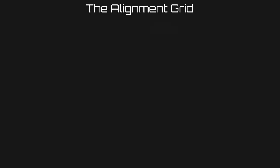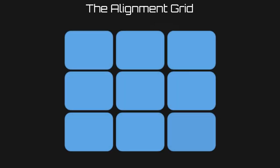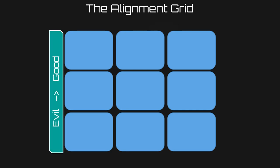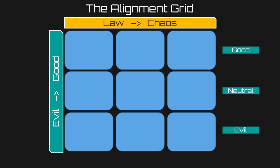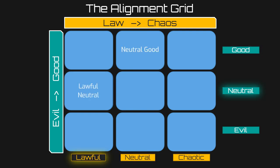The classic representation of alignment is a 3x3 grid with 9 boxes total. One axis represents a character's ethics and morality — that's called the good-to-evil spectrum — while the other axis represents the character's sense of order or rebellion, noted along lawful to chaotic. By lining up each axis, we can label the 9 alignments: neutral good, lawful neutral, or chaotic evil, for example, and the middle of both axes is labeled true neutral.